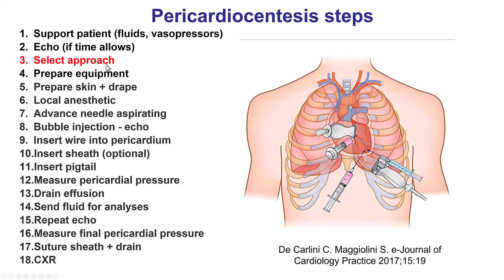Step number three is to select the approach. There are three potential approaches: the first is the subxiphoid, which is the most common one for perforations; the second is the apical, which is also commonly used; and the third is the parasternal. The parasternal approach is much less commonly done in practice.